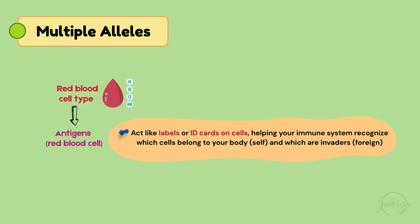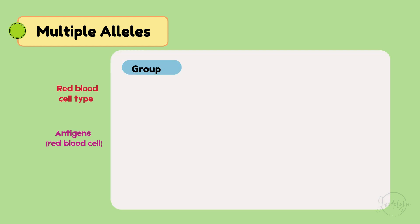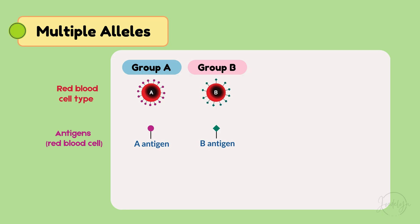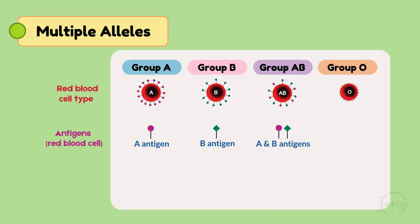Antigens act like labels or ID cards on cells, helping your immune system recognize which cells belong to your body (self) and which are invaders (foreign). Group A: you've got A antigens. Group B: you have B antigens. Group AB: lucky you, you have both A and B antigens. Group O: you've got no antigens at all.